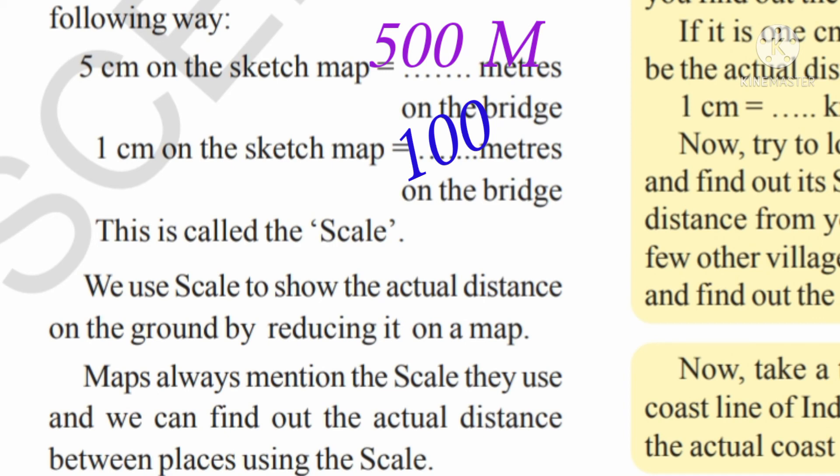She drew the 500 meter distance in a small sketch of 5 centimeters. So, 1 centimeter on the sketch map is equal to 100 meters on the bridge. For 100 meters, she took 1 centimeter. This is called scale.